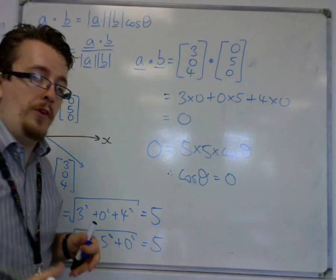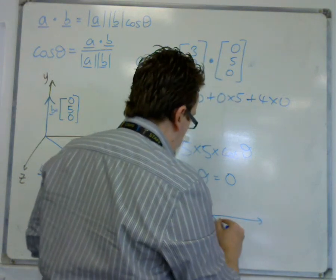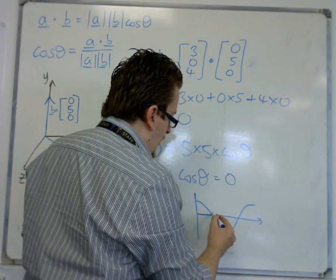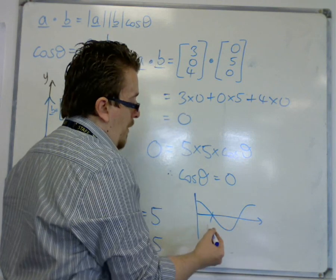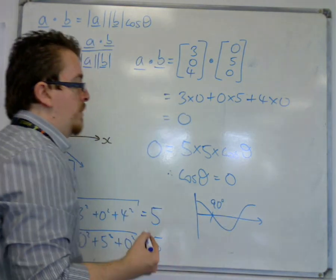Now if you think of where is cos theta 0, then you're looking at here and here as well, but the key idea is here, and that's at 90 degrees.